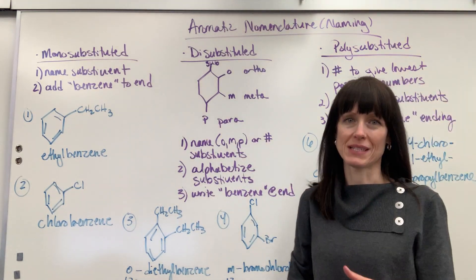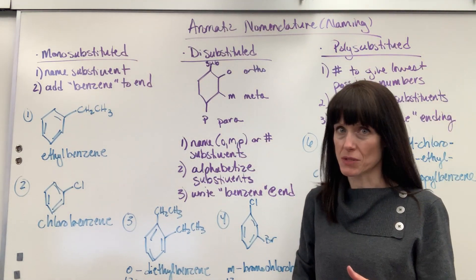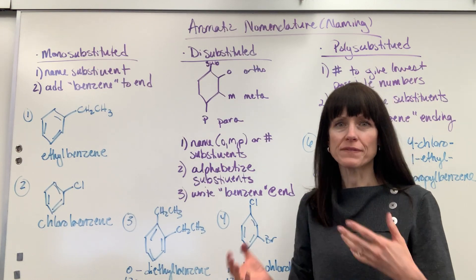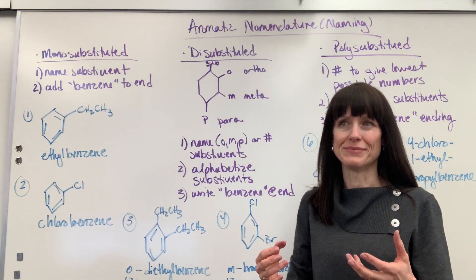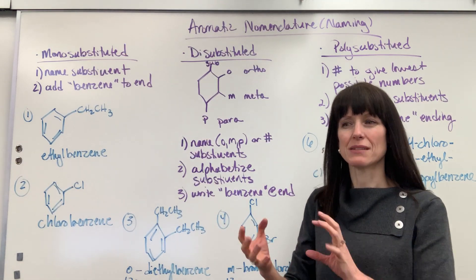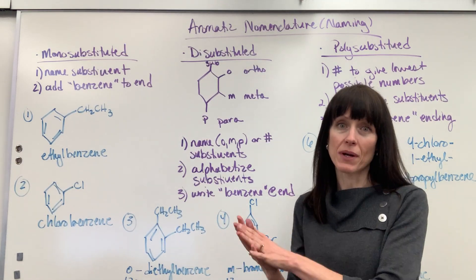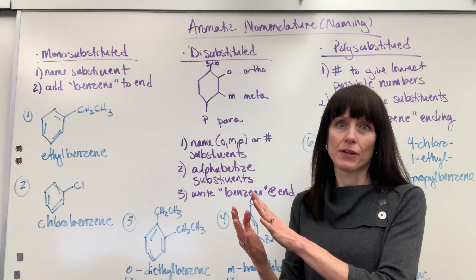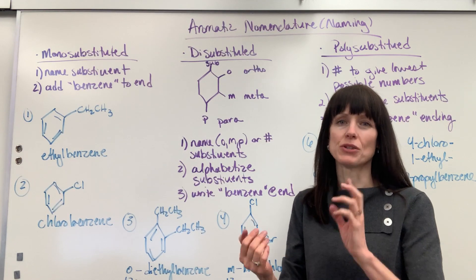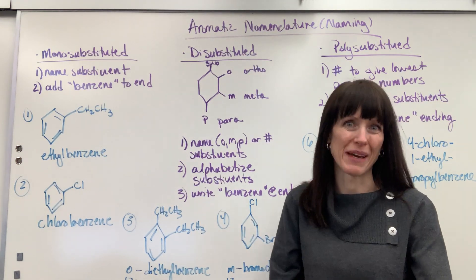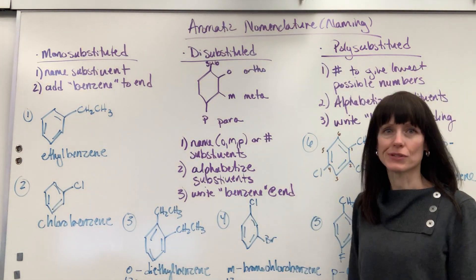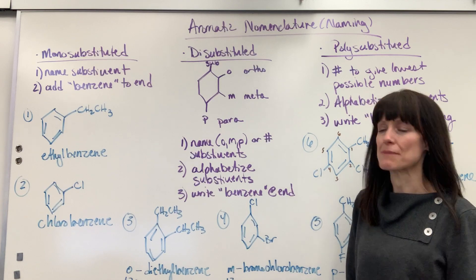Next, you alphabetize those substituents. You'll see it with the numbers — it doesn't mean the numbers have to go lowest to highest. When you write these, you always write them alphabetically. And then at the very end, you just write the word benzene.